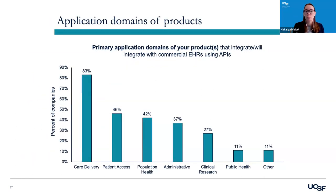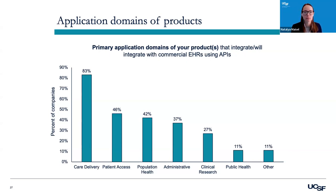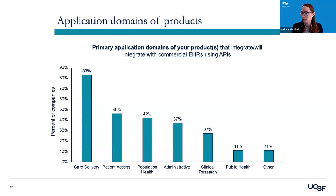To give a sense of the domains these companies are working in: about 83% were integrating in the domain of care delivery, such as clinical decision support, telehealth, and clinical messaging — that's definitely the biggest area in our sample. A little less than half had products in the domain of patient access. About 42% had products in population health, and then the list continues down for admin, clinical research, and smaller for public health.